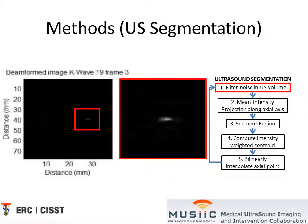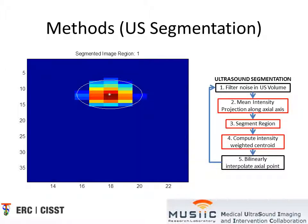This is an example of what a filtered photoacoustic point signal looks like in an ultrasound image. In each ultrasound volume, we take each image and project its mean intensity along the axial axis. This results in a lateral elevational image. We can then compute an intensity-weighted centroid and use bilinear interpolation to determine the axial point.